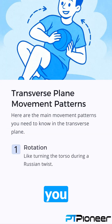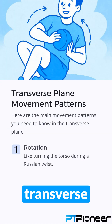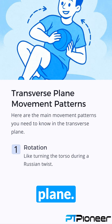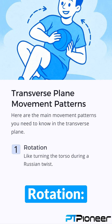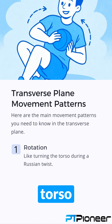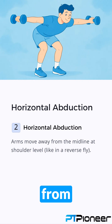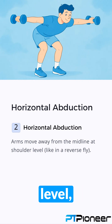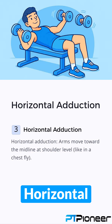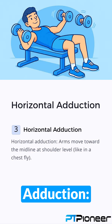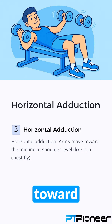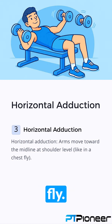Here are the main movement patterns you need to know in the transverse plane. Rotation — like turning the torso during a Russian twist. Horizontal abduction — arms move away from the midline at shoulder level, like in a reverse fly. Horizontal adduction — arms move toward the midline at shoulder level, like in a chest fly.